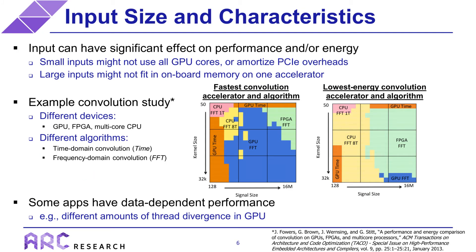One use-case-specific consideration that can greatly affect accelerator choice is input size and characteristics, because the input can have a significant effect on performance and energy. For example, small inputs might not use all of a GPU's cores, achieving far below peak computational throughput. A small input might also not effectively amortize PCIe transfer overheads. Conversely, inputs above some size might not fit in onboard memory on a particular accelerator, causing worse performance despite better peak potential. To decide on an accelerator, you often need some understanding of what the input will look like for your particular use case.